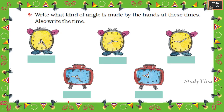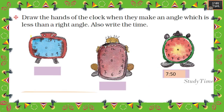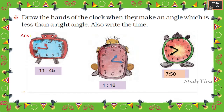What kind of angle is made by the clock hands at these times? 7:25 is an acute angle, 8:15 is an obtuse angle, 9:10 is an obtuse angle, 9:25 is an obtuse angle, 10 o'clock is an acute angle. Next, draw the hands of the clock when they make an angle less than a right angle — for example, 11:45, 11:06, and 7:50.